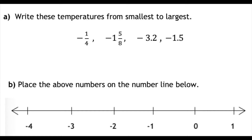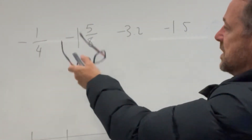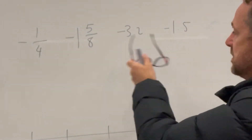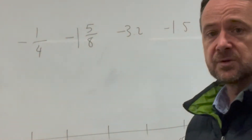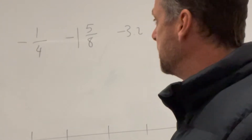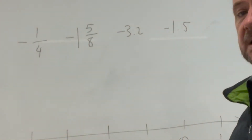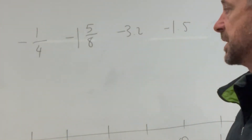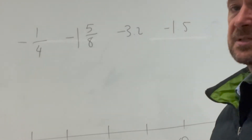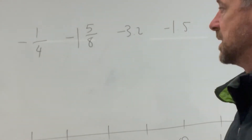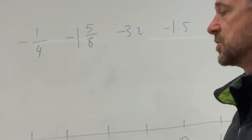The first question looks at comparing these four fractions: a common fraction, a mixed number, and two decimal fractions. We need to convert those to be similar in order to do the comparison and list them in order from smallest to largest.